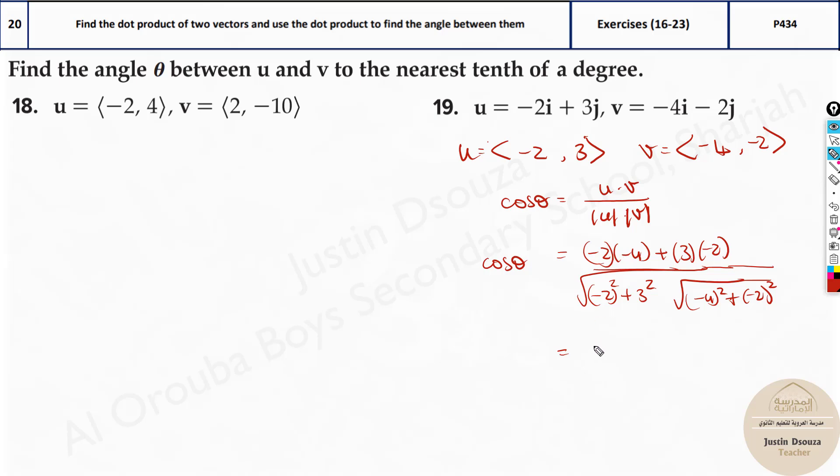So here you will get minus and minus becomes plus 8, minus 6. So here it'll be 2 divided by 4 plus 9 would be root of 13 multiplied with, here it's 16 plus 4 is root of 20.